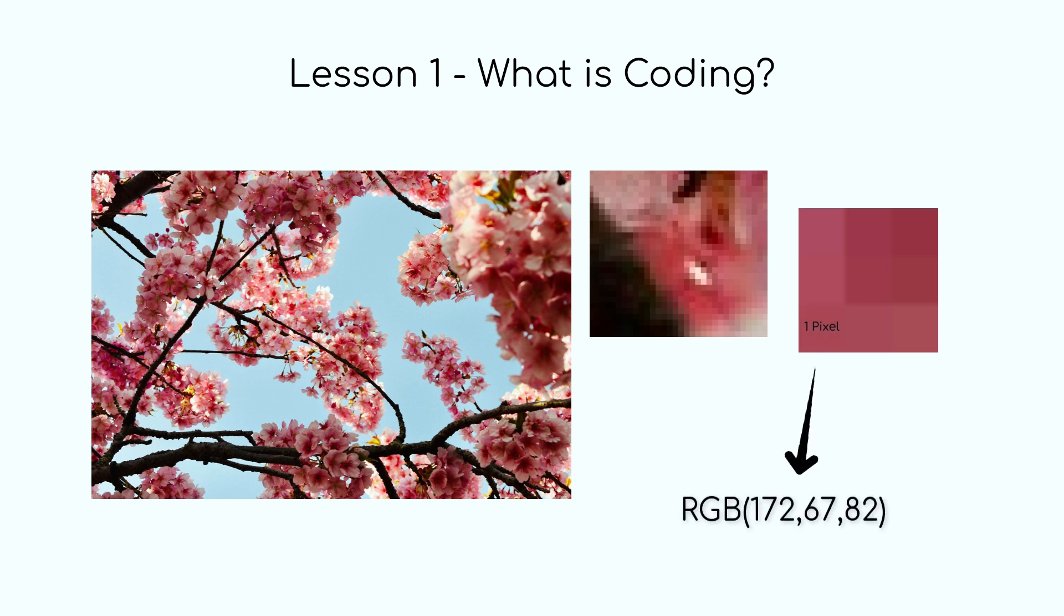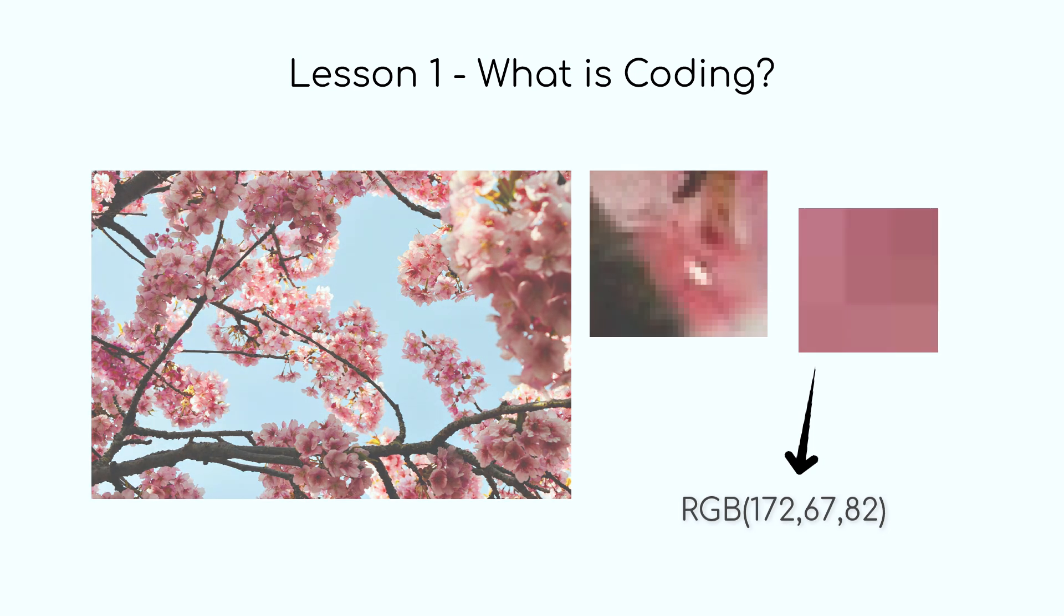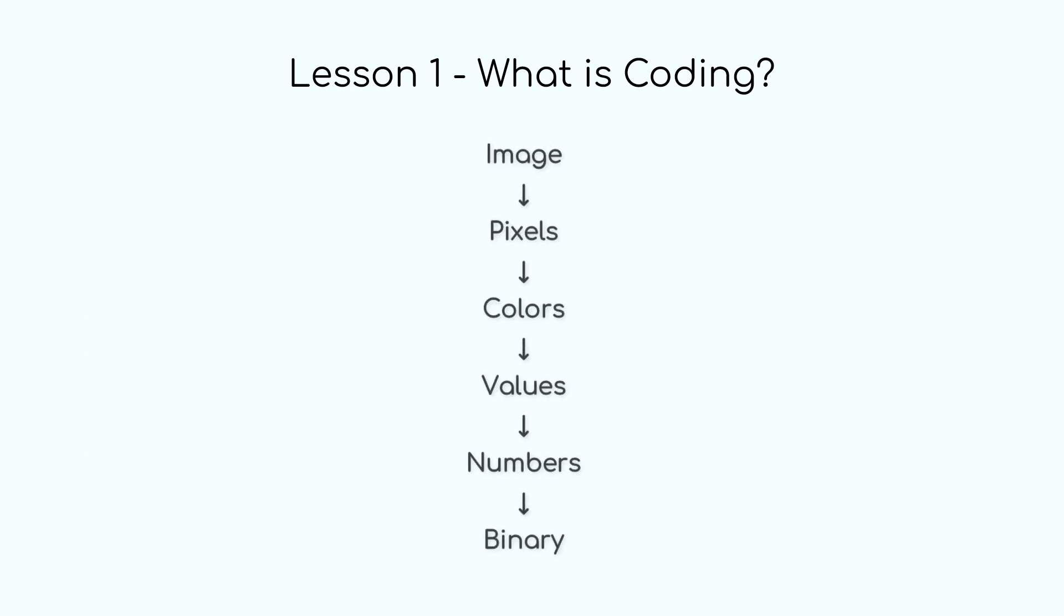These values are numbers that represent the intensity of each color in that pixel, and now we manage to deconstruct this complex image into colors, and these colors have values, and now the computer will understand which color it should place in this specific pixel. So this applies to images, videos, and also to code.